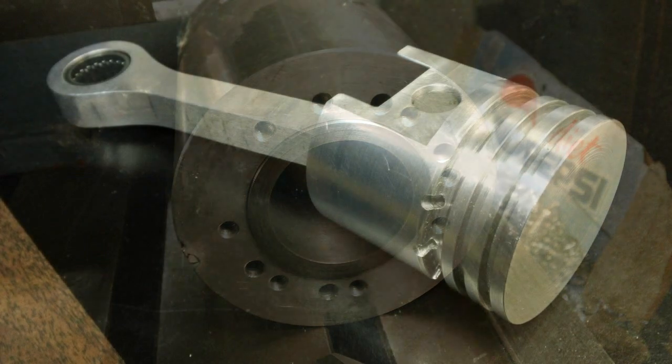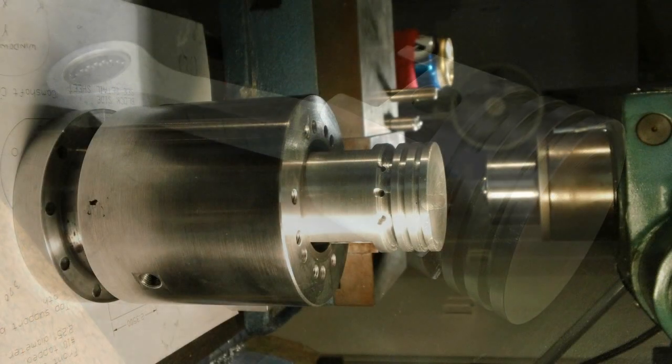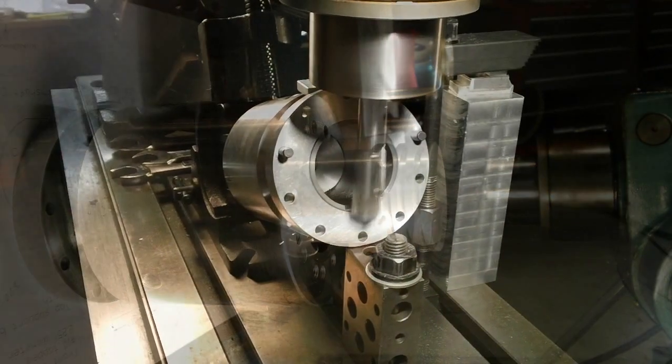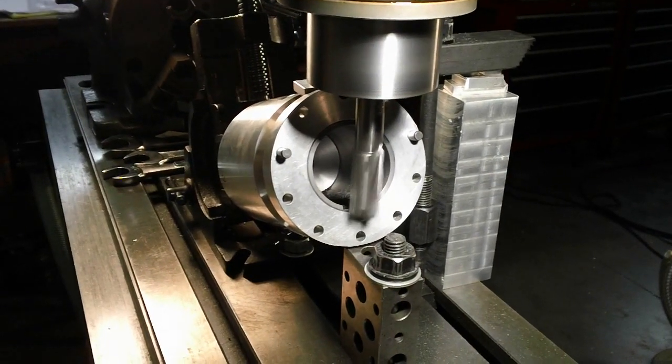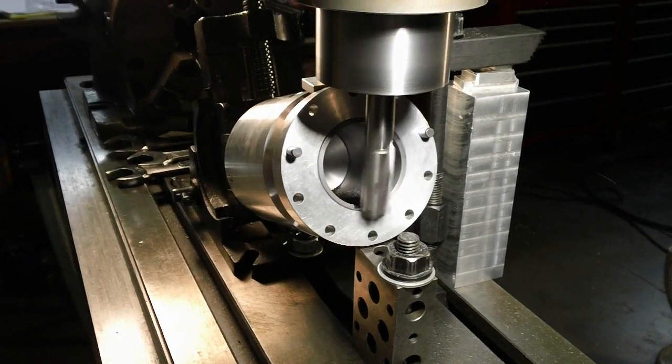The piston is also made from beer can aluminum and has two cast iron compression rings and an oil control ring. The piston is lubricated by splash oil from the crankshaft. It is connected to the crankshaft by an aluminum rod and a 1/2 inch shoulder bolt. Relief ports were cut into the cylinder walls to ensure clearance between the rod and the cylinder.